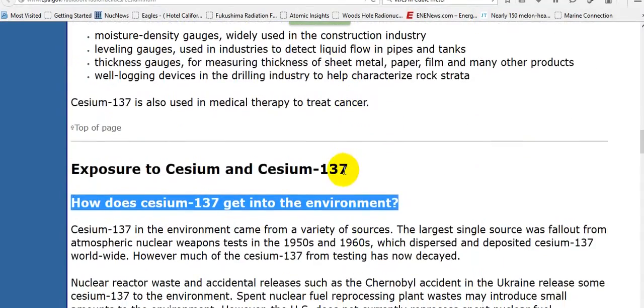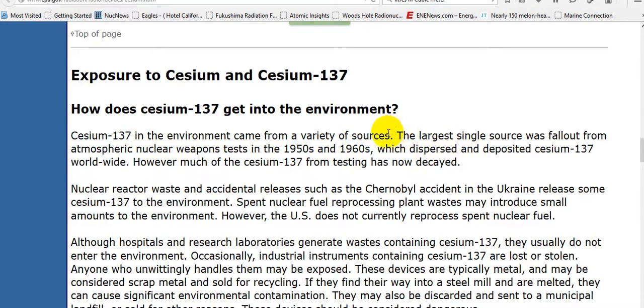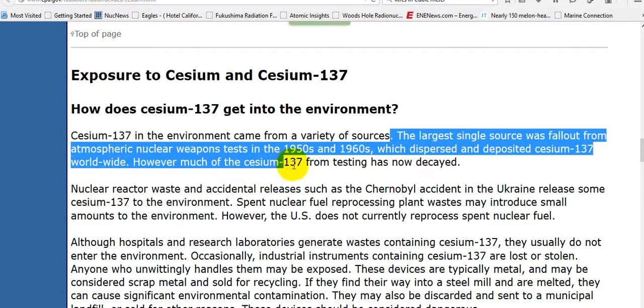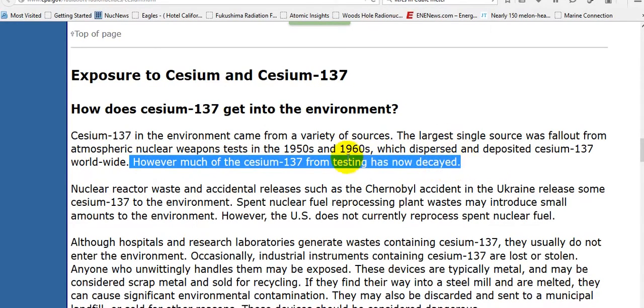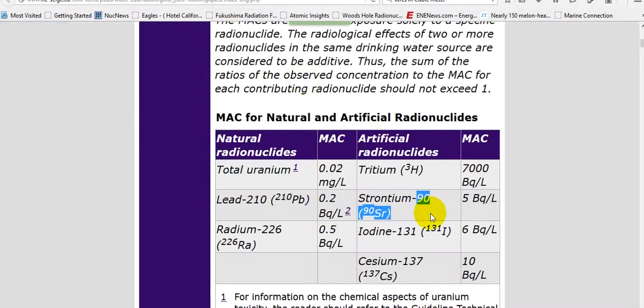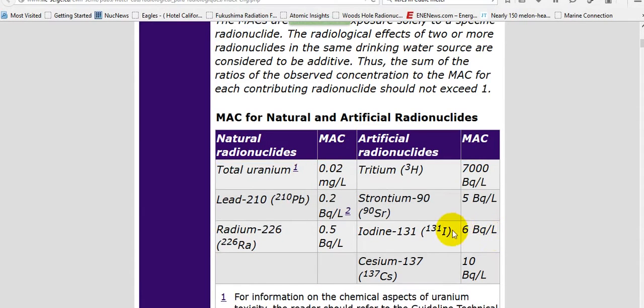Exposure to cesium. Cesium-137 in the environment came from a variety of sources. The largest single source was fallout from atmospheric nuclear weapons tests in the 50s and 60s, which dispersed cesium-137 worldwide. However, much of the cesium from testing has now decayed. Every 30 years it decays by 50%. So they're saying there's no cesium in the environment. So why do we increase it? Because of Fukushima, three 100% melted reactors in Japan. The jet streams come right to Canada. The ocean currents come right to Canada. I'm on the expedition for life looking for damage on the Pacific coastline. There's mass regulated year-long by warm waters from Japan.